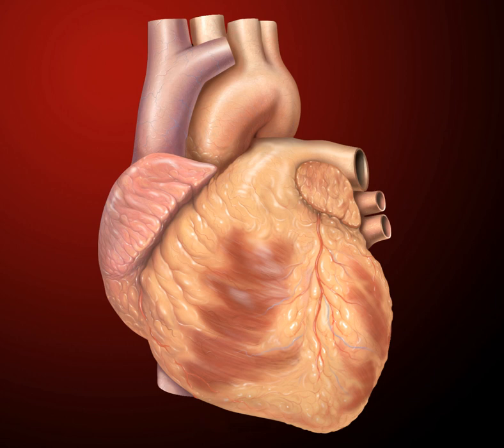The heart pumps blood with a rhythm determined by a group of pacemaking cells in the sinoatrial node. These generate a current that causes contraction of the heart, traveling through the atrioventricular node and along the conduction system of the heart.